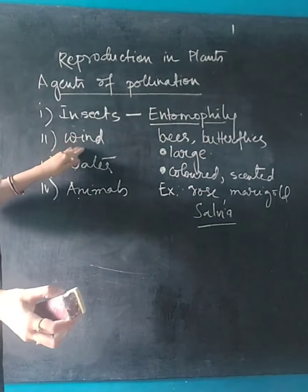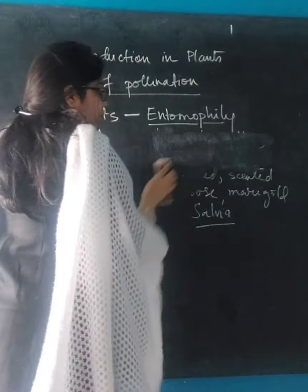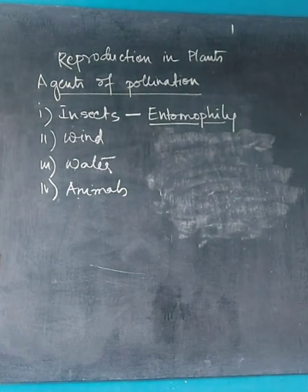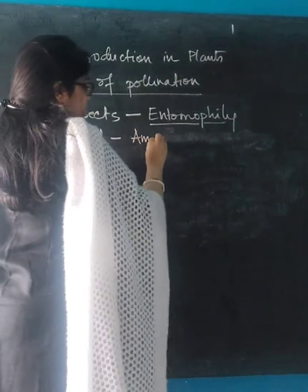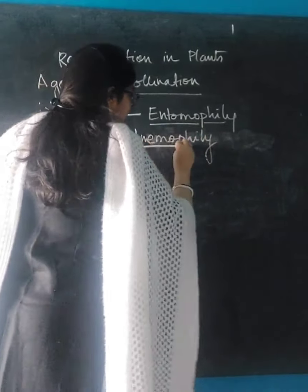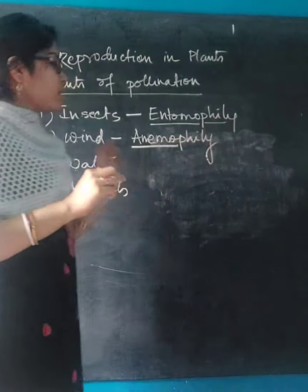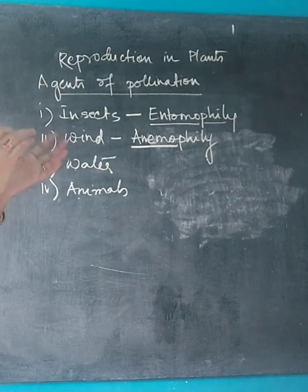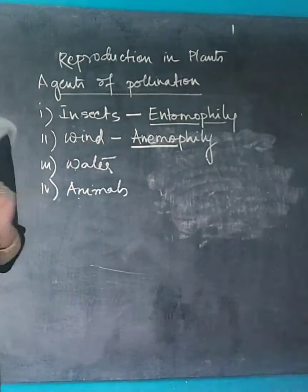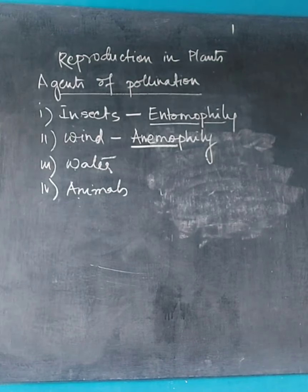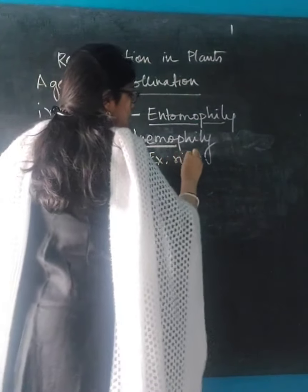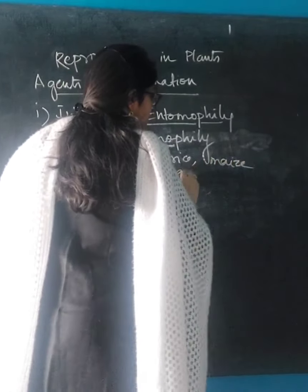Next I will move on to the next category, which is wind. When pollination takes place with the help of wind — meaning wind is the agent of pollination — it is known as anemophily. The word 'anemo' is related to wind, and 'phily' means in favor of this agent. Pollination by wind is known as anemophily. Examples of plants include rice, maize, and grasses.